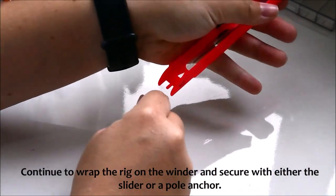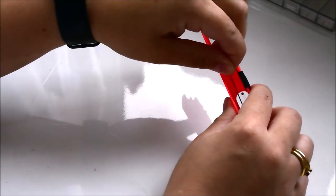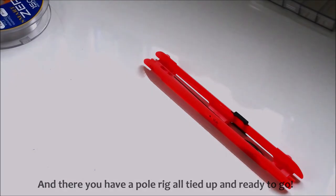Continue to wrap the rig on the winder and secure with either the slider or a pole anchor. And there you have a pole rig all tied up and ready to go.